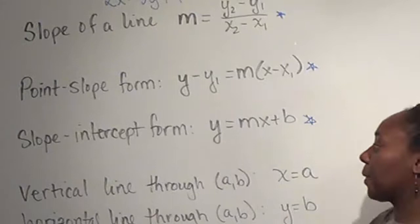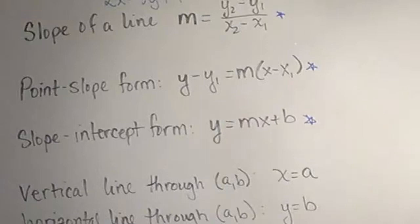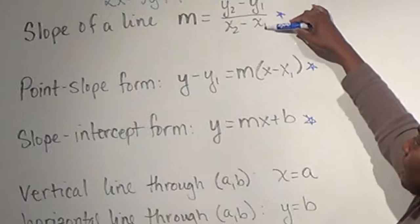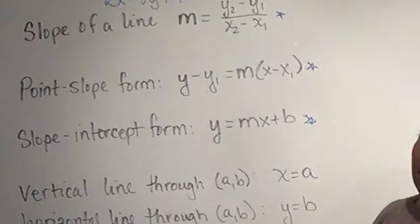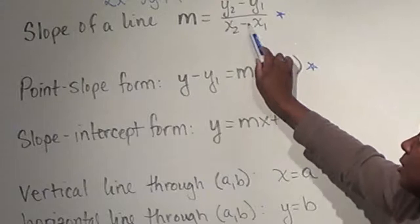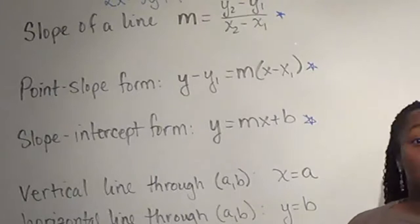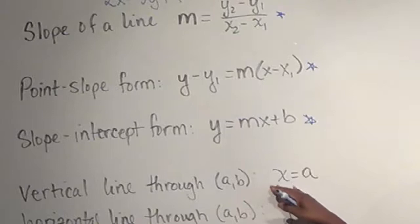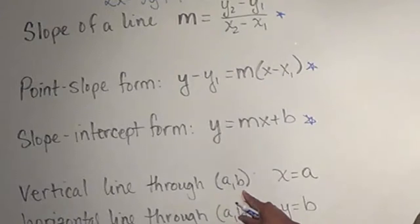These next two are special situations for linear equations. The first is a vertical line. If my change in y over change in x has the same x values, I end up dividing by zero, which is problematic. So instead of saying there's no slope, we call it an undefined slope, and it means we're looking at a vertical line with no m in any of my equations. For a vertical line passing through a point (a, b), whatever that x value is, that's what the line equals — so x equals a.